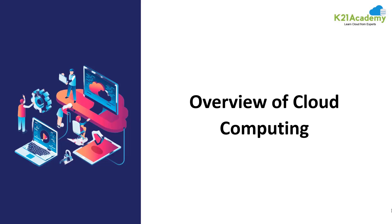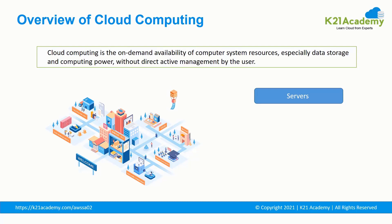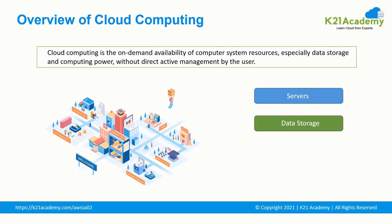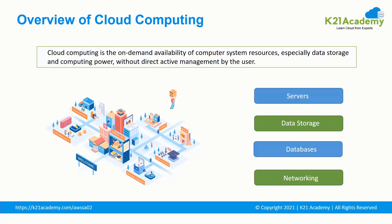Now let's have a look at the overview of cloud computing. As per the definition, cloud computing is the on-demand availability of computer resources like servers — which contain memory and CPU — different types of storage like blob storage and object storage, databases for structured, unstructured and semi-structured data, and networking which includes virtual networks, subnets, and connectivity with on-premise infrastructure. Cloud computing is like your electricity bill — you only pay for what you use.